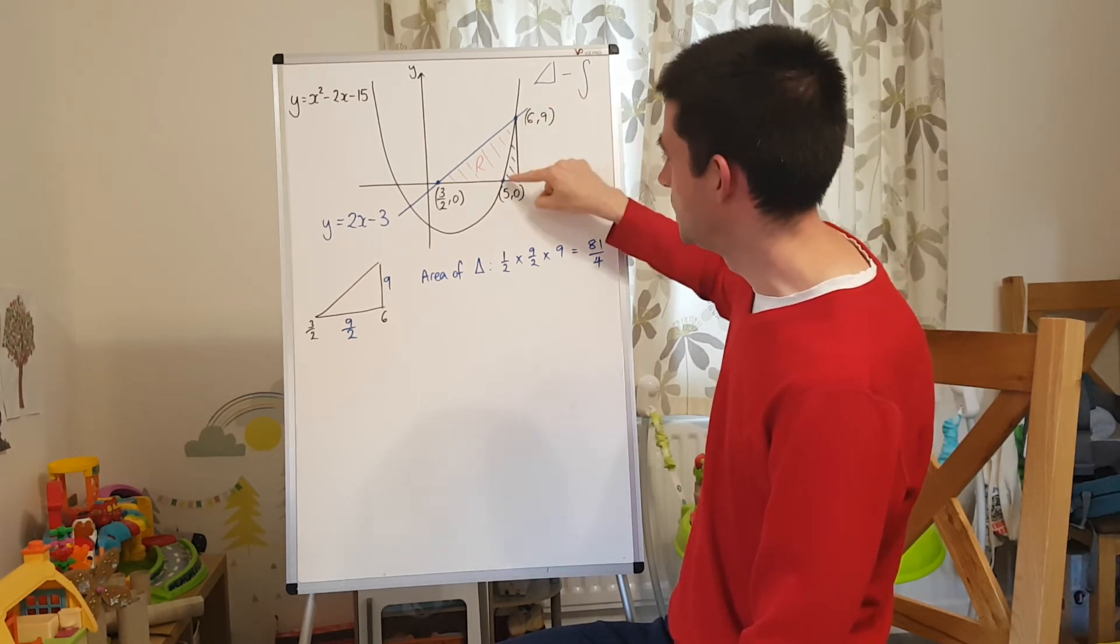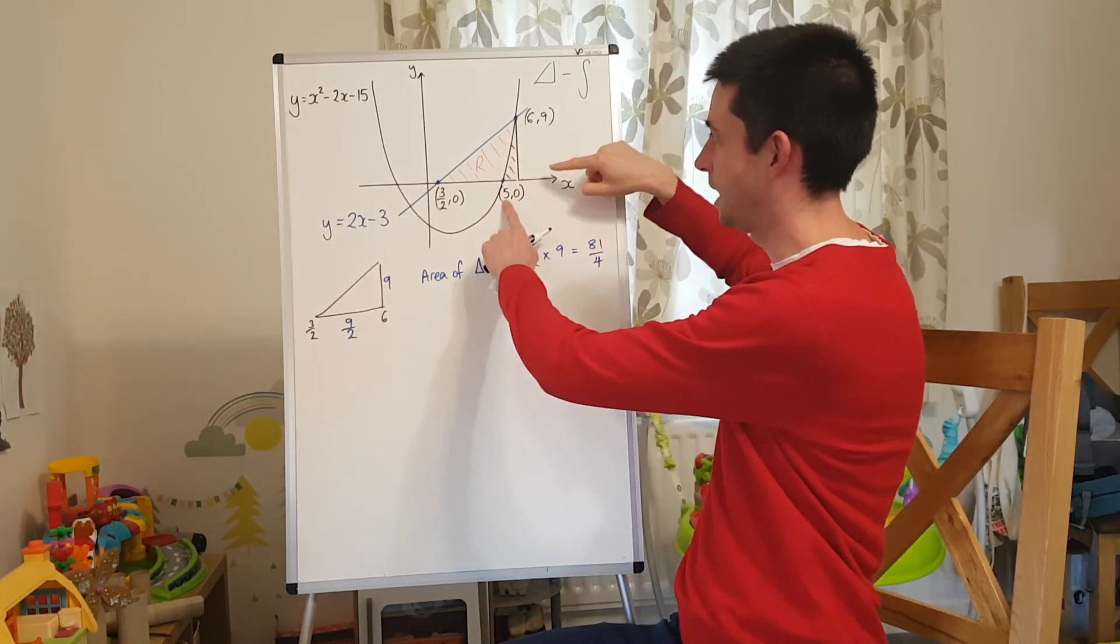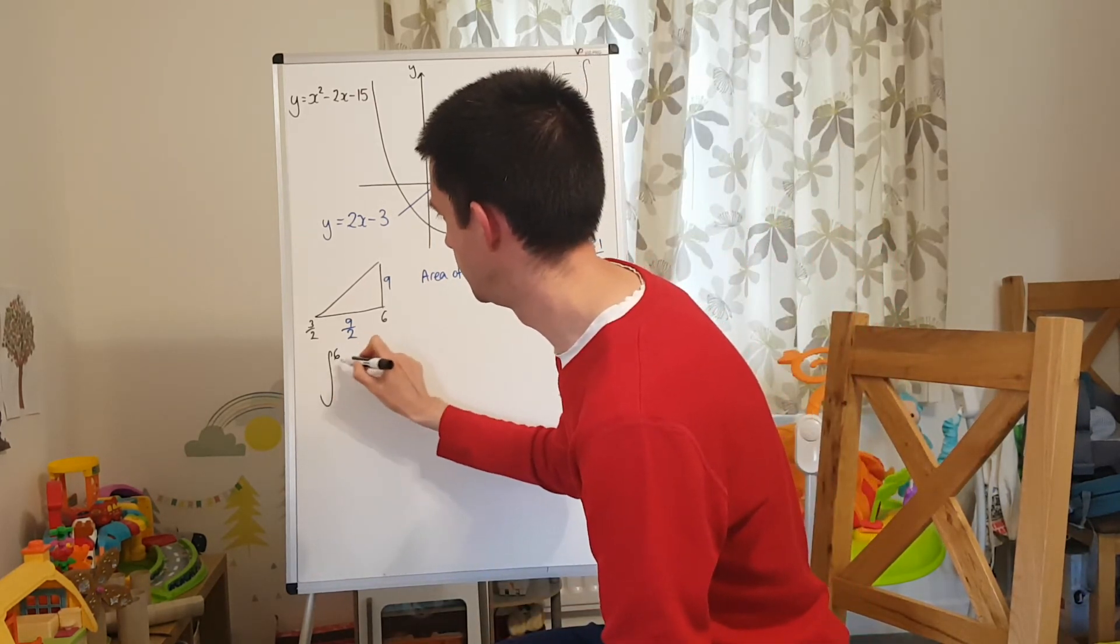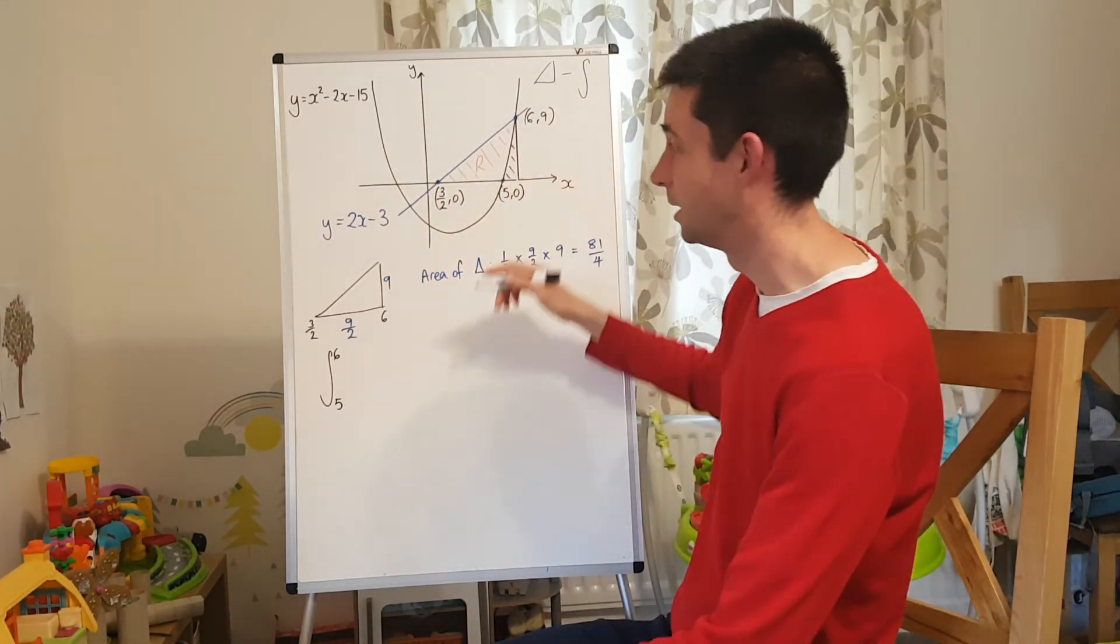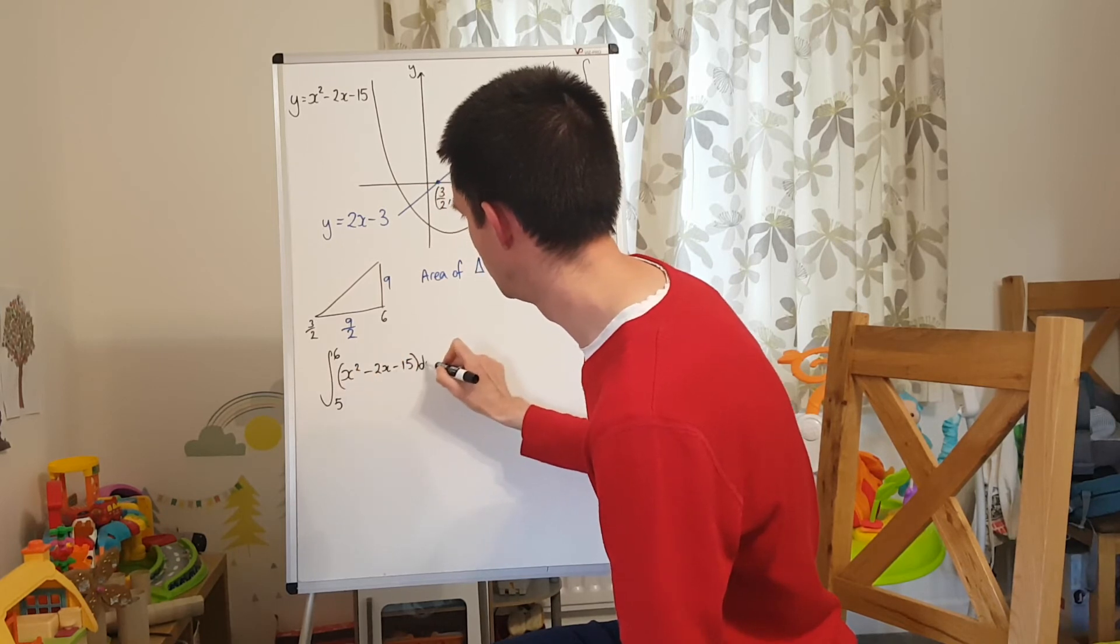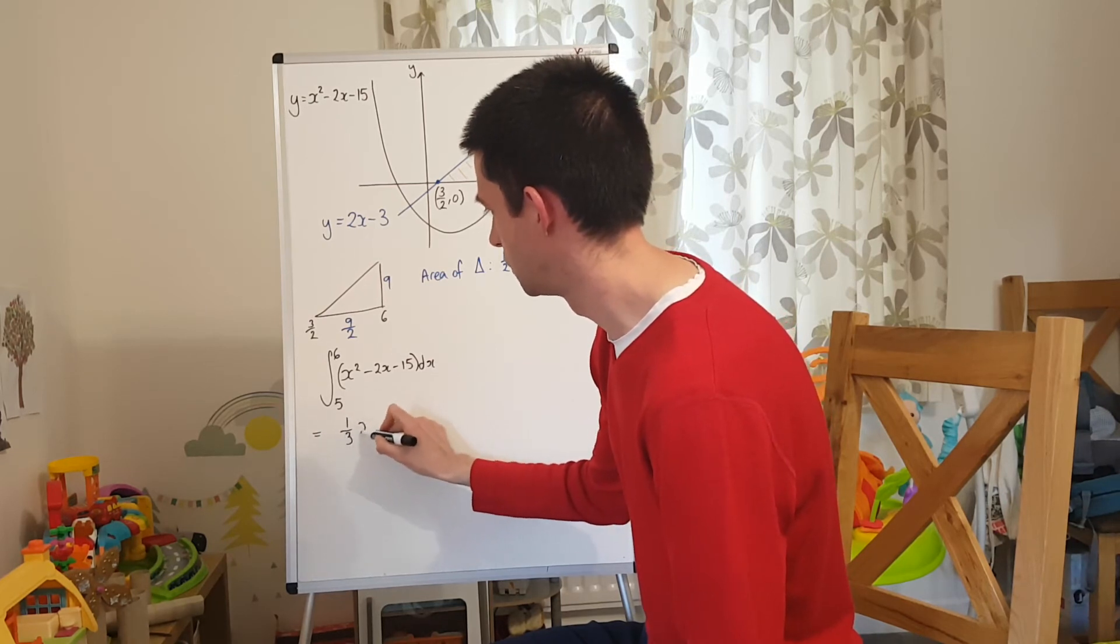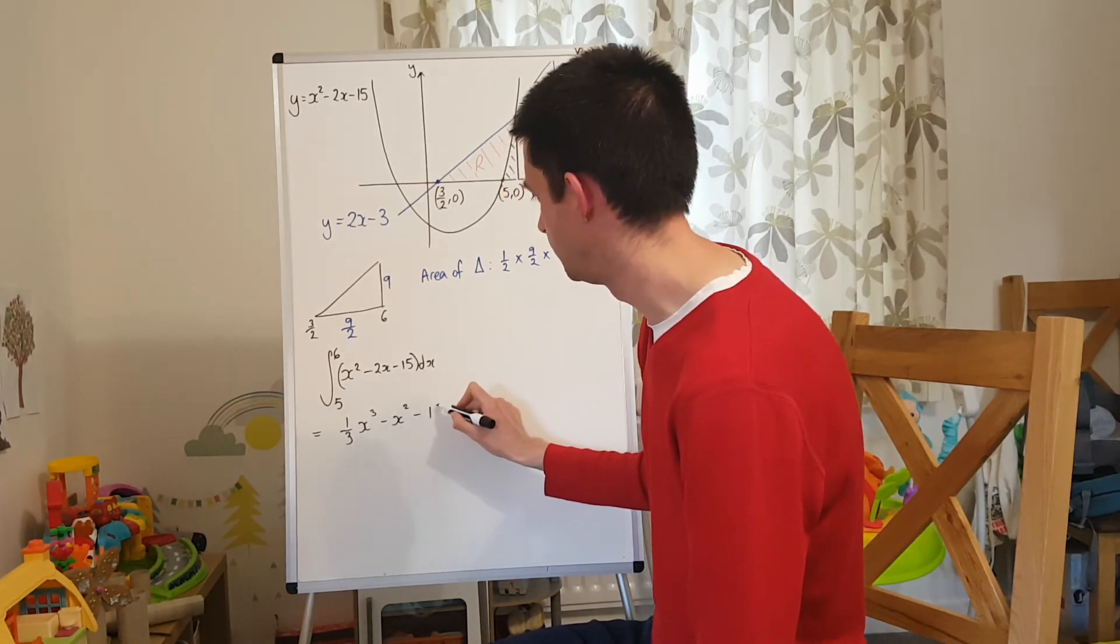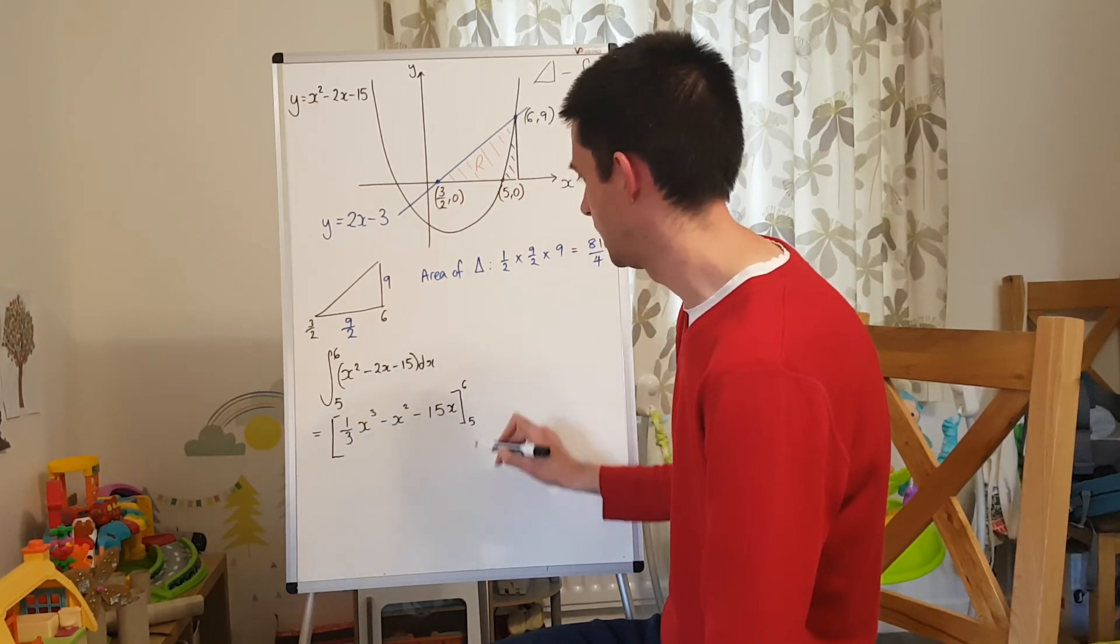So the last thing I need to do is I need to find this blue shaded area here, which is the area between the curve and the x-axis between x equals 5 and x equals 6. So what I'm going to do is I'm going to integrate between limits of 6 and 5 the equation of the curve because it's the curve that I'm trying to find the area beneath. So x squared minus 2x minus 15 with respect to x. I'm going to integrate that one term at a time. So x squared goes to 1 third x cubed. Negative 2x is going to go to negative x squared. Minus 15 is going to go to negative 15x. And that is between 6 and 5.